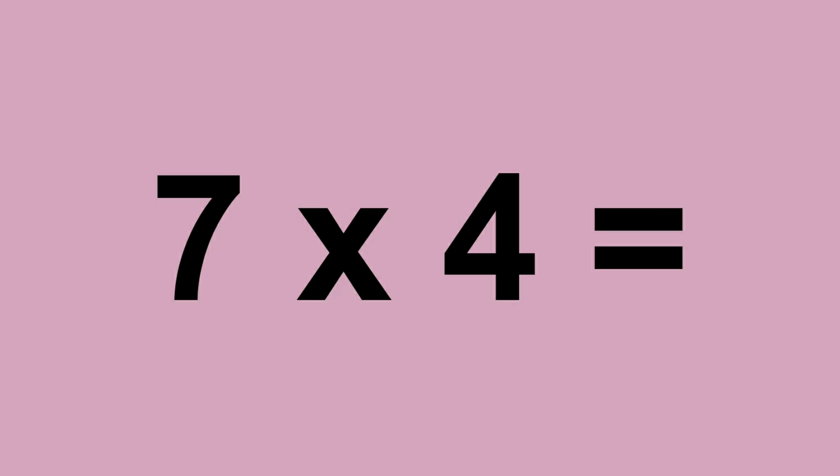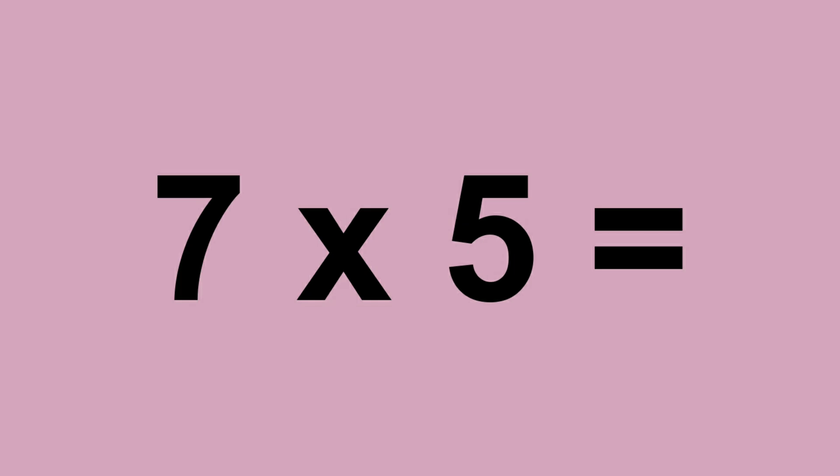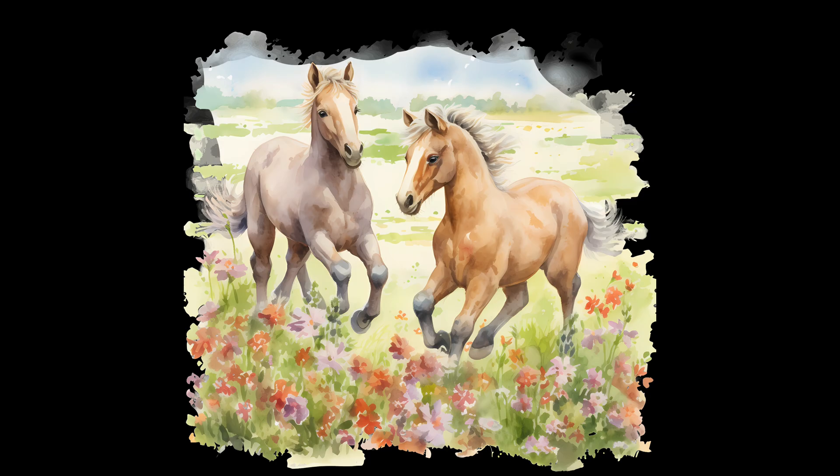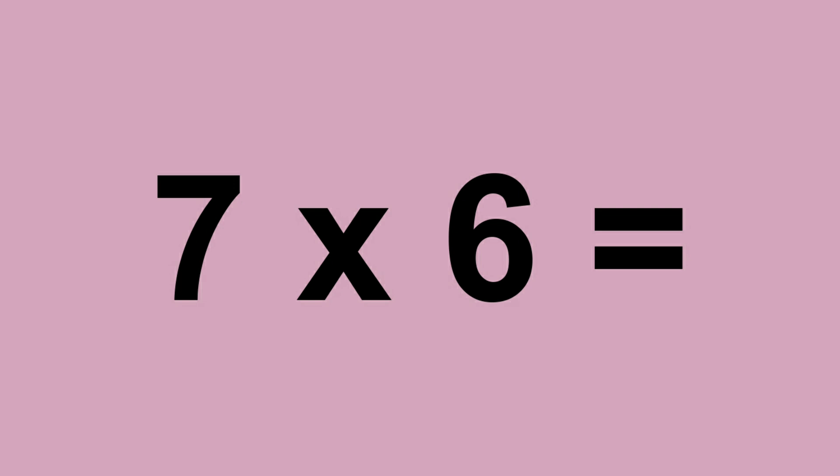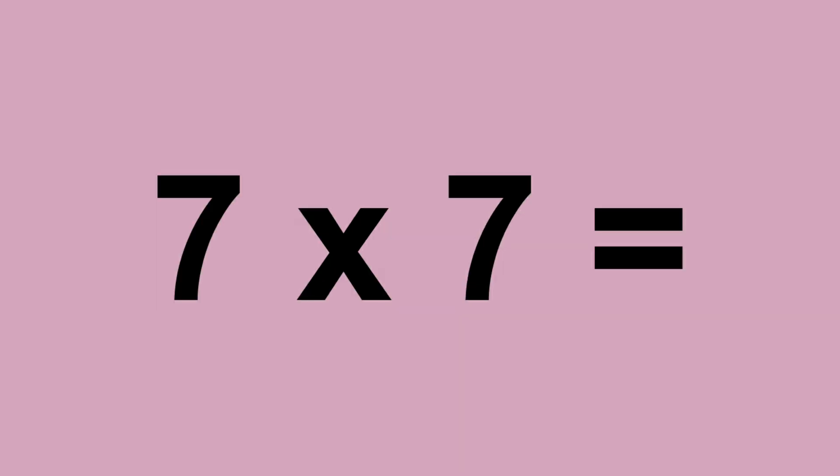7 times 4 equals 28. 7 times 5 equals 35. 7 times 6 equals 42. 7 times 7 equals 49.